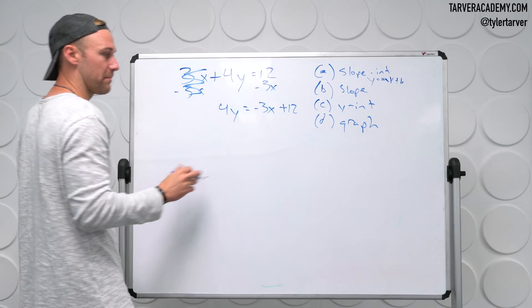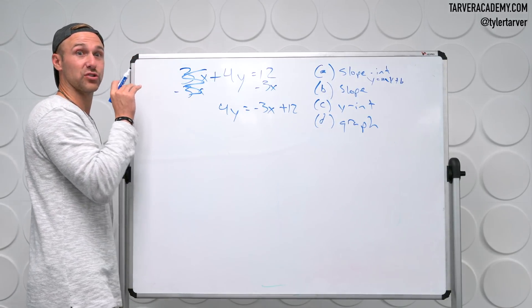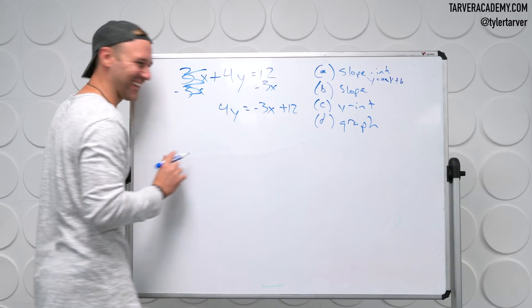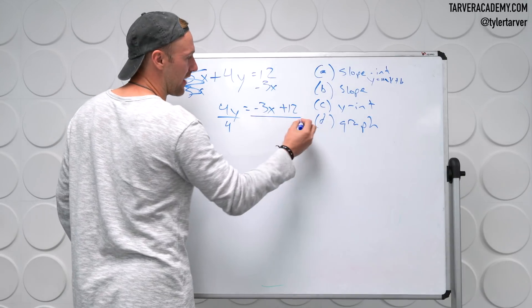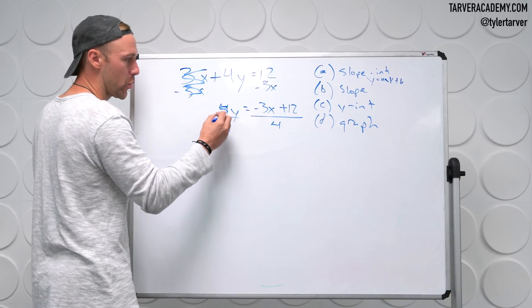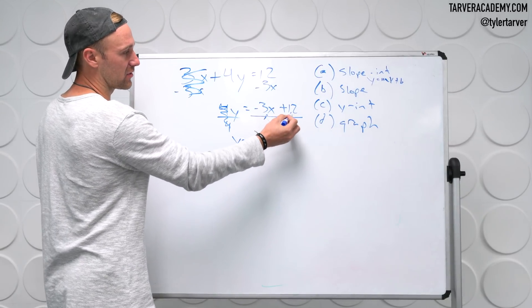So last thing we got to get rid of is, give a hint, it rhymes with s'more. 4. Good job. Divide that by 4, and we're going to divide everything over here by 4. Now it's gone. It goes there, and it goes there.